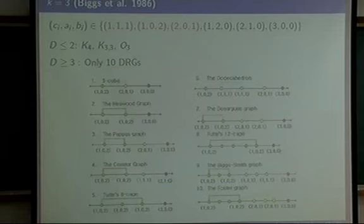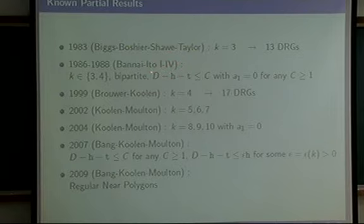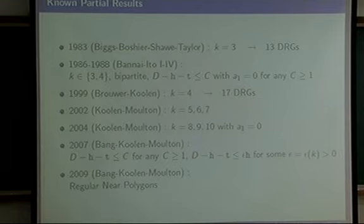Some known results before our work: in 1993 they classified cubic distance-regular graphs. Subsequent papers proved the finiteness theorem on distance-regular graphs with valency 3 or 4, or all bipartite distance-regular graphs, or under other special conditions. We also deeply considered this conjecture in two prior papers, but there remained a gap — we needed further consideration of the distribution of eigenvalues.